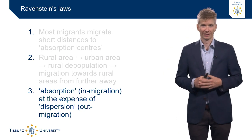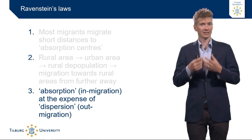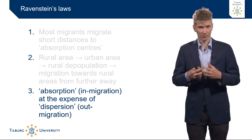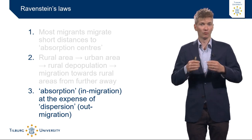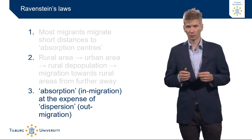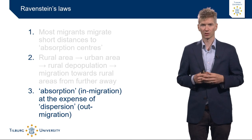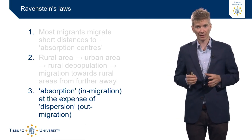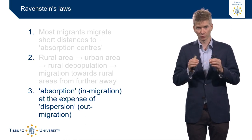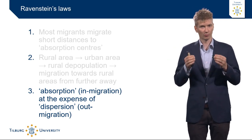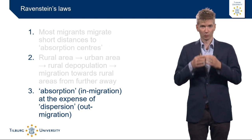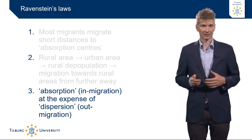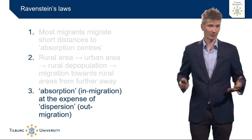The third law is that absorption, or in-migration, is at the expense of dispersion, or out-migration. This means that if many people migrate towards a certain location, generally fewer people move away from it. For more detail on this dynamic, I recommend watching the knowledge clip on migration transition theories, which links in-migration and out-migration to levels of development of a country.